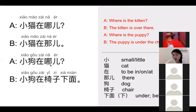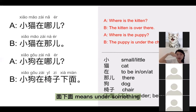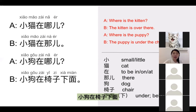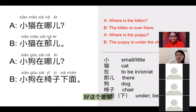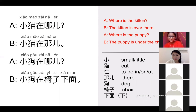小狗在哪儿?Where is the puppy? 小狗在椅子下面。下面 means under something. 椅子下面 means under the chair. 小狗在椅子下面。小猫在哪儿? 小猫在椅子下面。非常好,谢谢你们。